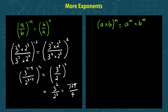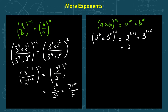When you have two different bases like a times b, but they're to the power of m, they can be split into a to the power of m times b to the power of m. For example, what if we have 2 to the power of 3 times 3 to the power of 2, all to the power of 4? We can split it to get 2 to the power of 3 times 4, and 3 to the power of 2 times 4, giving us 2 to the power of 12 times 3 to the power of 8.